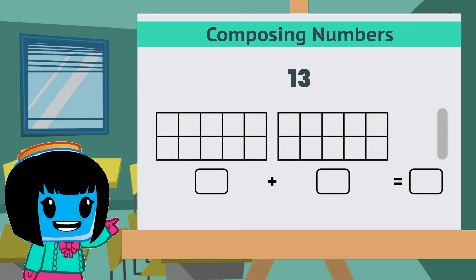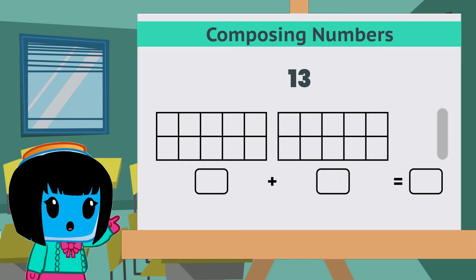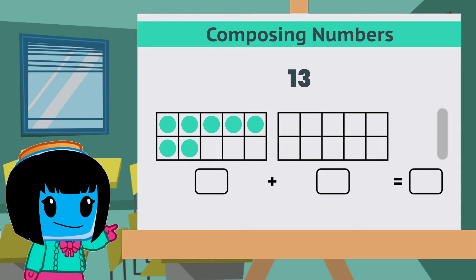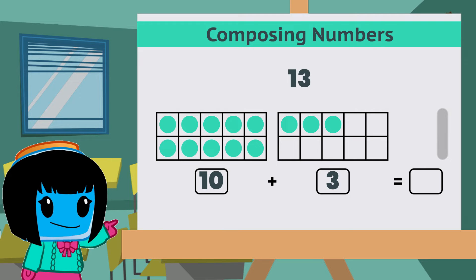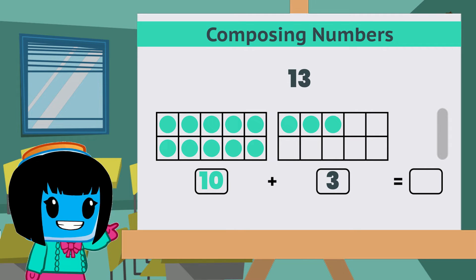We have the number 13. Let's fill out our 10 frames. We have 10 dots in the first frame and 3 in the second. That means 10 plus 3 equals 13.